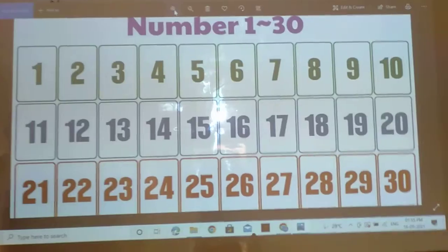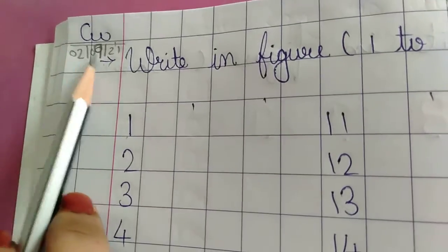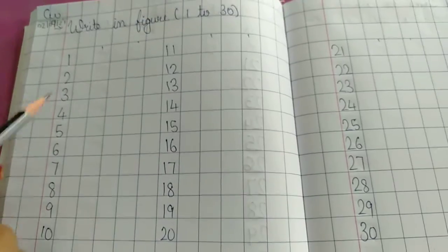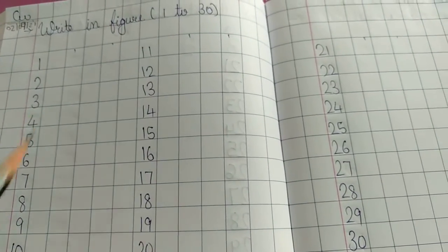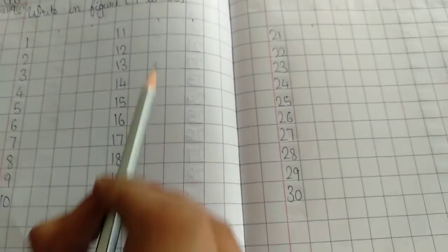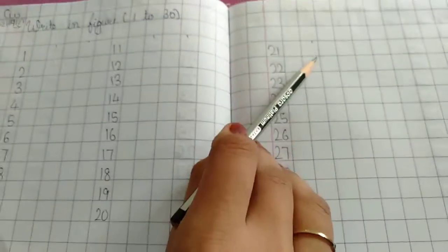Now we will write in our workbook. Parents, you can get this book ready. Classwork, date is 2-9-21. Write in figures, 1 to 30. First page: 1 to 10, two times. 11 to 20, two times. And second page: 21 to 30, two times.